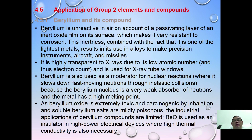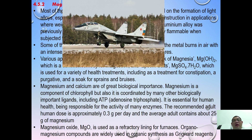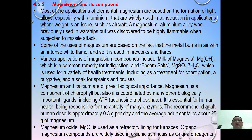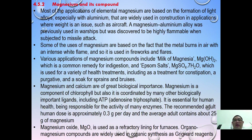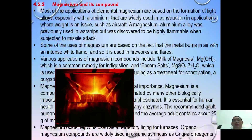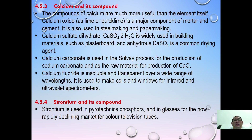Magnesium is used for lightweight applications, for example making the body of aircraft, especially when alloyed with aluminium. Magnesium burns with an intense white flame, so it is used in fireworks and flares. Applications of magnesium compounds include milk of magnesia as a common remedy for indigestion and constipation. Magnesium oxide is also used as a refractory lining for furnaces due to its very high melting point, high thermal conductivity, and low electrical conductivity. Organomagnesium compounds are widely used as Grignard reagents.